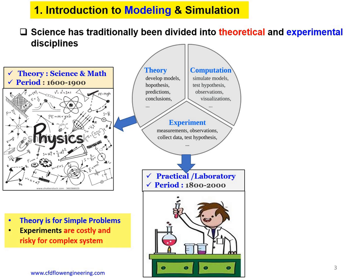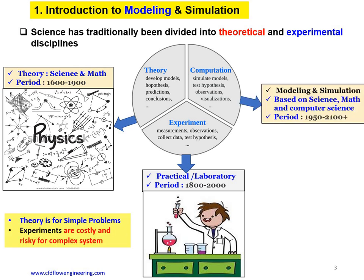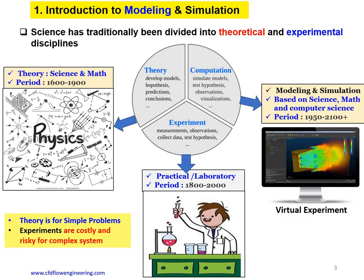To overcome the shortcomings of theory and experiment, computation has emerged as the third pillar for analysis. It is based on computer-based analysis combining science, mathematics, and computer science. It evolved after the 1980s and has become increasingly important. Computation is useful to carry out virtual experiments rather than doing them on the real ground — it can help develop knowledge, technologies, and futuristic technology.